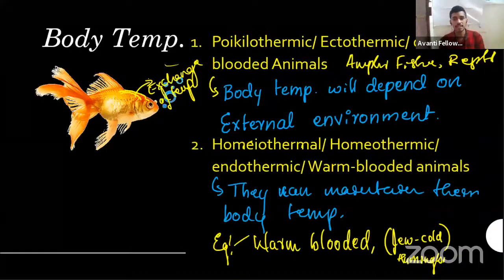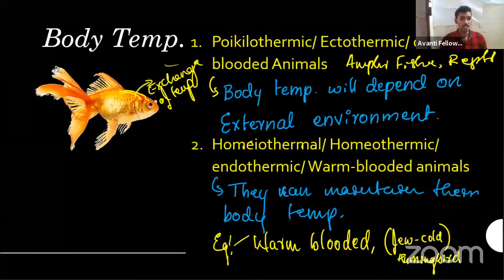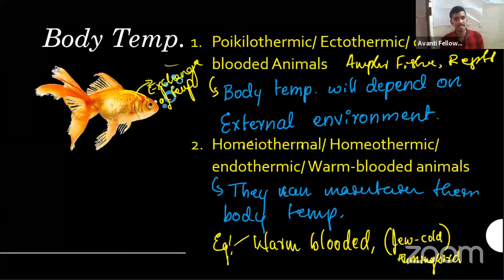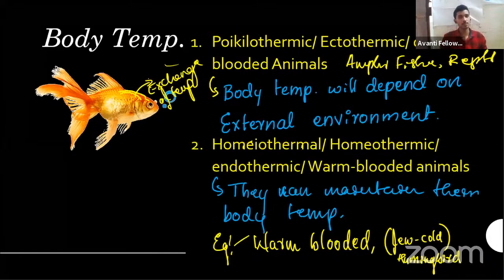If you saw the video I sent — the surface area of the outer body versus the internal body matters. If an organism is smaller, the outer surface area is larger relative to internal. If larger, the outer surface area is smaller and internal is larger. Those with a large outer-to-inner surface area ratio often go for cold-bloodedness as they can't maintain the energy.